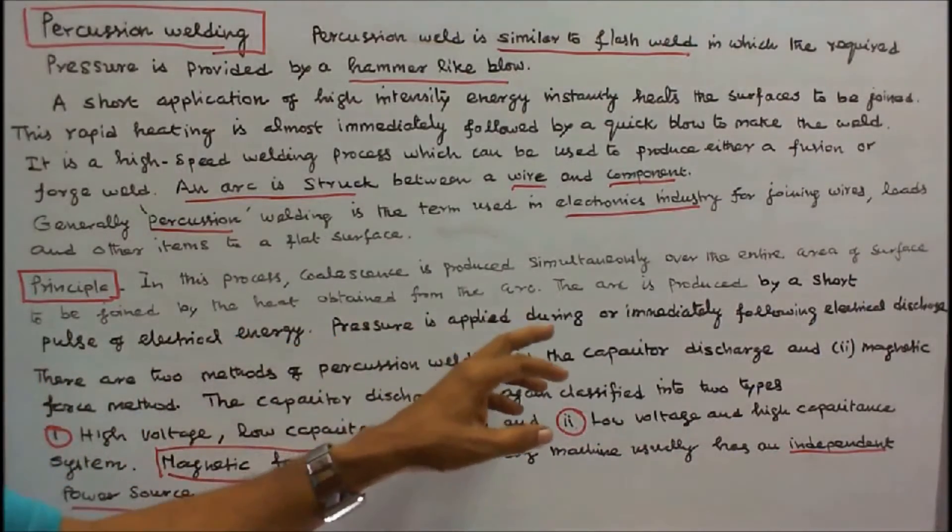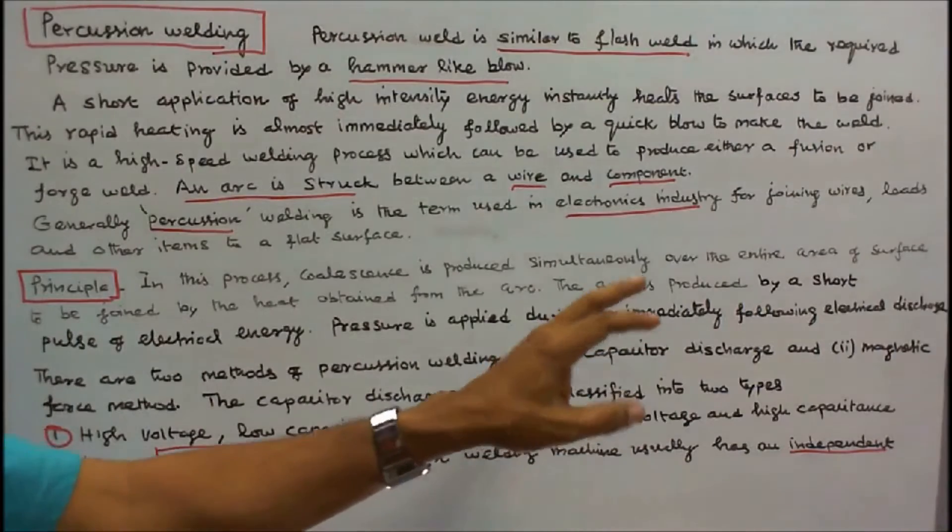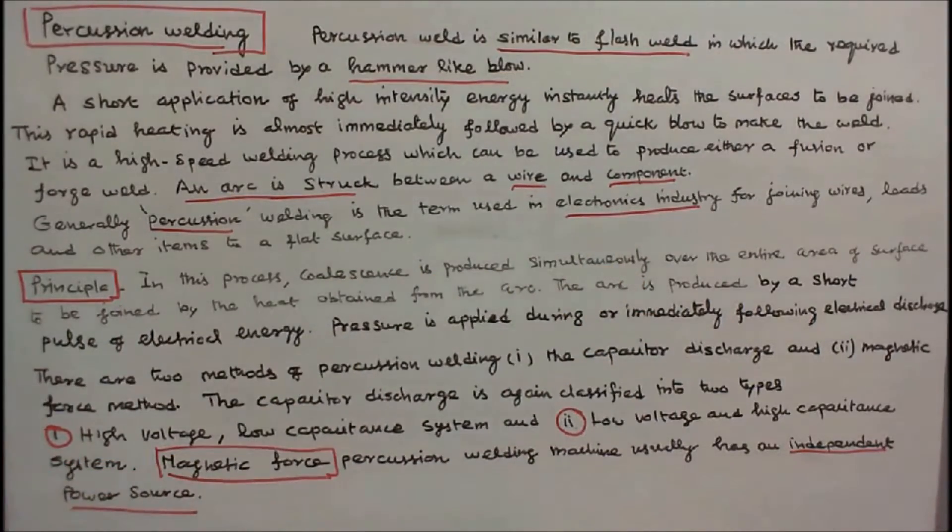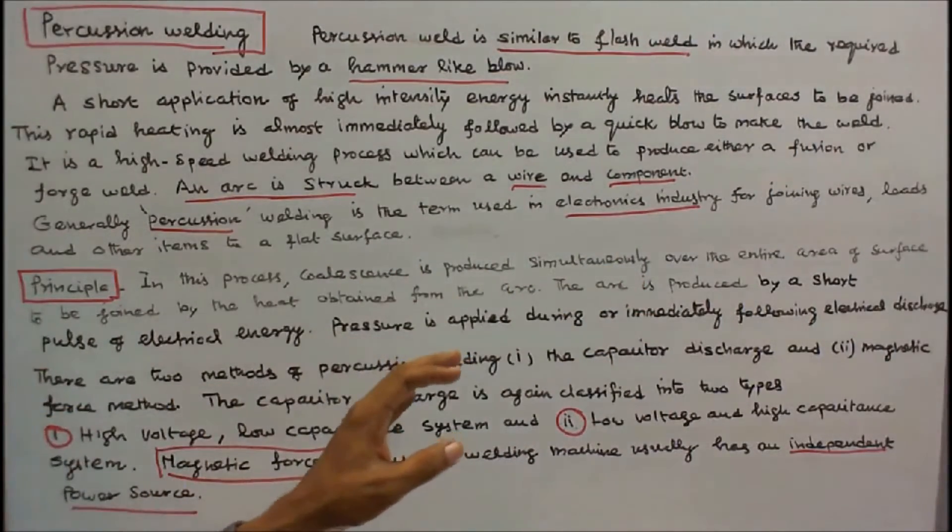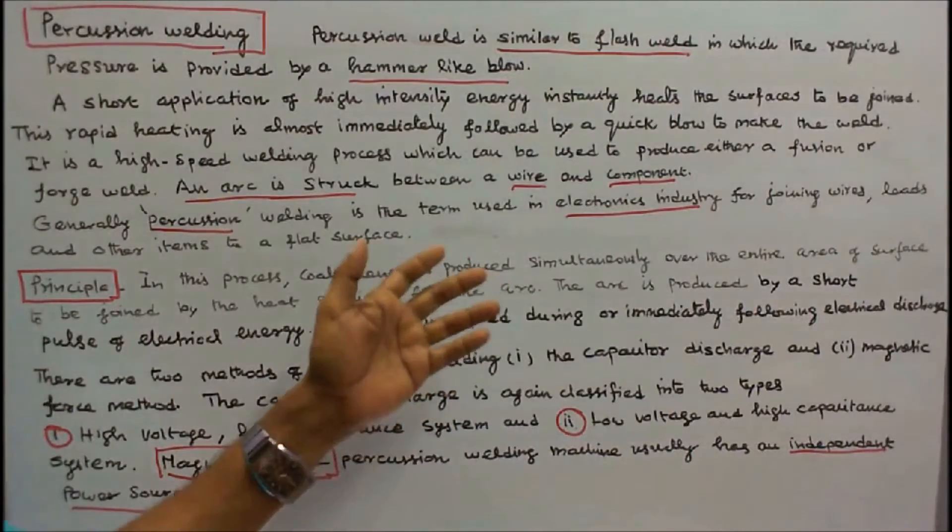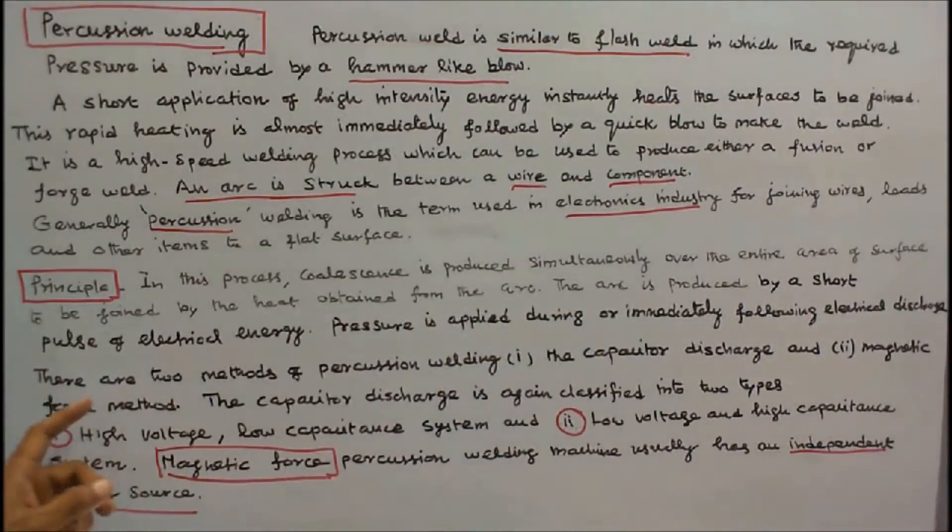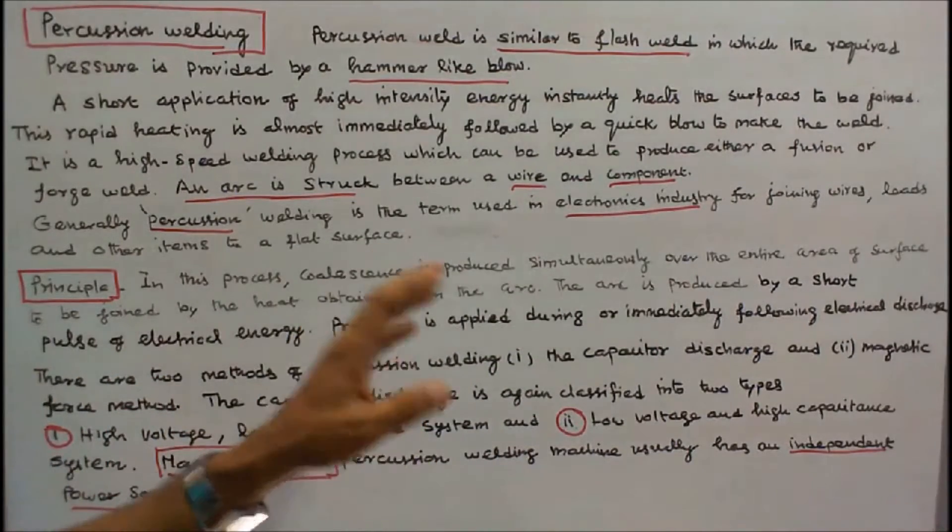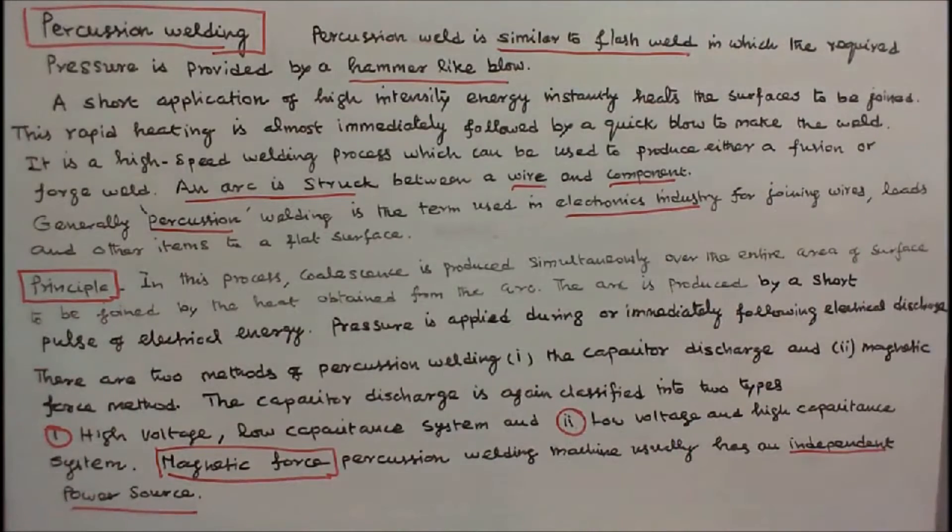Pressure is applied during or immediately following electrical discharge. There are two methods of Percussion Welding. One is Capacitor Discharge Method. Another is Magnetic Force Method. The Capacitor Discharge Method is again classified into two types: High Voltage Low Capacitance System and Low Voltage High Capacitance System.